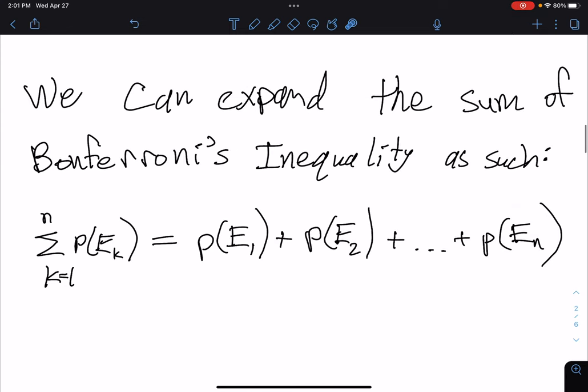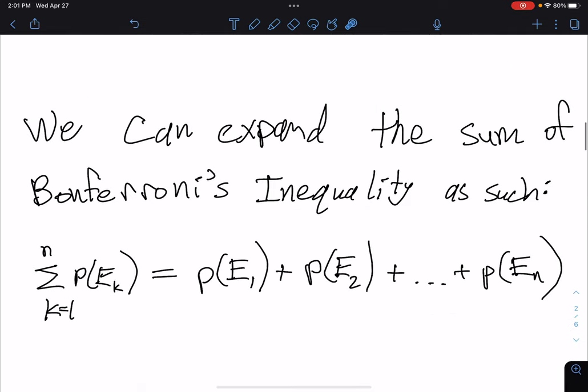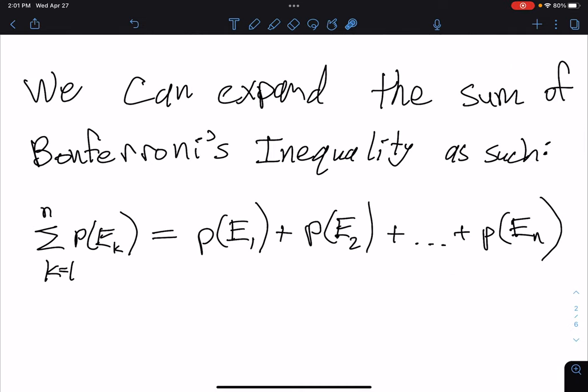All right, so we can go ahead and expand the sum in Bonferroni's inequality, that's this sum right here. I'm going to rewrite it as probability of E1 plus probability of E2 plus all the way up to the probability of EN.